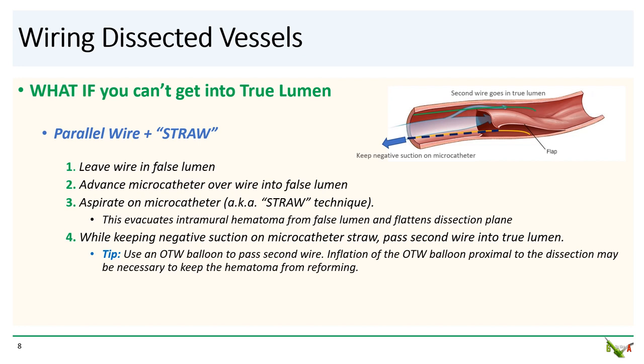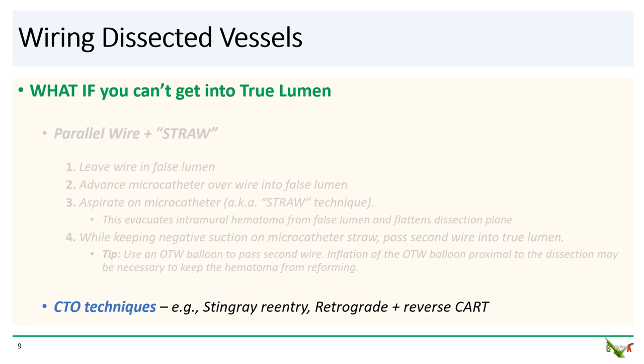The drawback, obviously, is that you'll be ischemic unless you've got collaterals, and you also won't be able to tell where your second wire is going very well. If the parallel wire and straw techniques don't work, there are a number of CTO techniques that can be useful — you can try the stingray balloon with a double-blind stick-and-swap to get back into the true lumen, usually in combination with the straw technique. You can try to go retrograde and reverse CART. Unfortunately, if you are at a community hospital, stingray balloons are usually not available, and retrograde interventions are not recommended at hospitals without cardiac surgery backup.